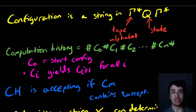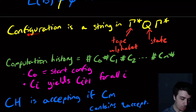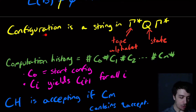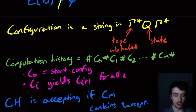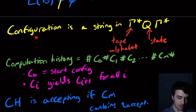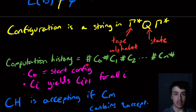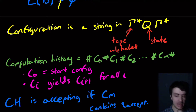Today we'll be looking at an undecidable problem for context-free grammars. Remember we were talking about configurations and computation histories before in the ELBA video. A configuration is just an encoding of what the Turing machine is doing at a particular time. A computation history is a sequence of those configurations such that the first one is the starting config — it must be q0 followed by w — and ci yields the next one for all i, meaning it's applying a transition.